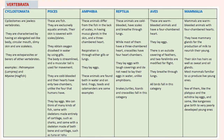Vertebrata is further classified into six categories: Cyclostomata, Pisces, Amphibia, Reptilia, Aves, and Mammalia. First is Cyclostomata — these are jawless vertebrates characterized by having an elongated eel-like body, circular mouth, slimy and scaleless skin. They are ectoparasites of other vertebrates; examples are lamprey and hagfish.